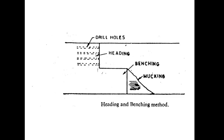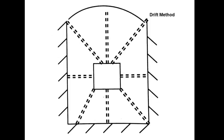The heading and benching method: first, excavation is carried out at the top of the tunnel face, and after the top excavation, benching — that is, the bottom excavation — is carried out. Top and bottom excavation together is called heading and benching. This method is also used for tunnel construction.